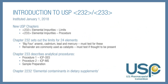The new USP chapters have been around for a number of years now. The new chapters consist of 232, which are the limits of elemental impurities, and 233, which is the procedure or actual methodology that allows us to reach the limits set forth in Chapter 232. Chapter 233 has two procedures for analysis, one for ICP-OES and one for ICP-MS. It also speaks about sample preparation. Chapter 2232 applies to elemental contaminants in finished dietary supplements and focuses on the Big Four.